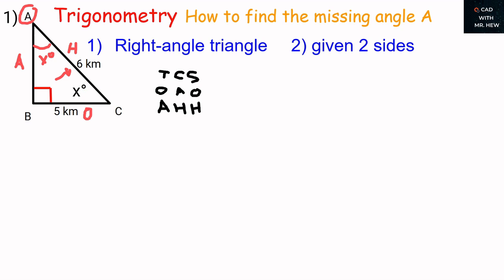So we have O and we have H. So O upon H is sine, right? So we're going to write sine Y degrees is equal to, what's the ratio? Opposite over the hypotenuse.